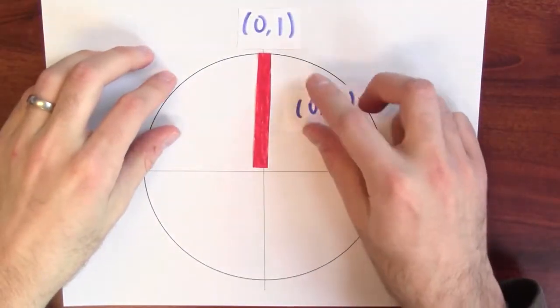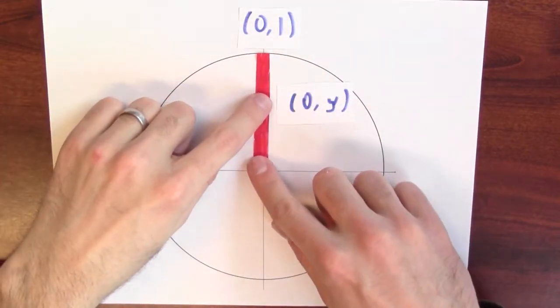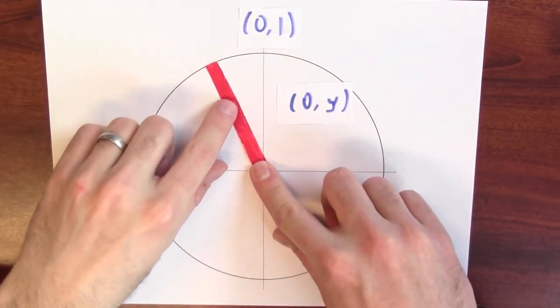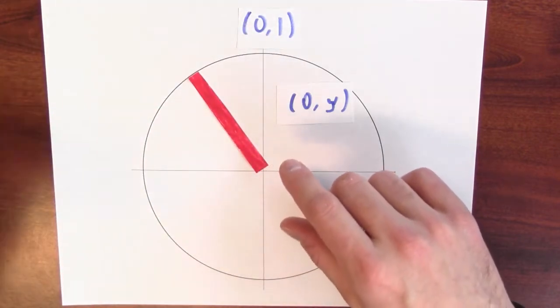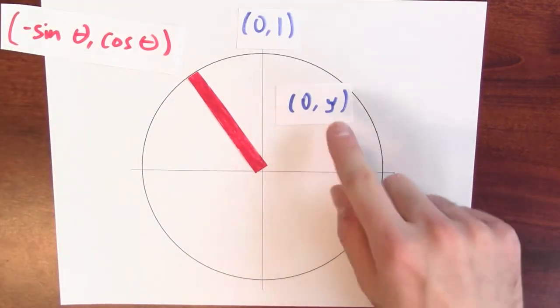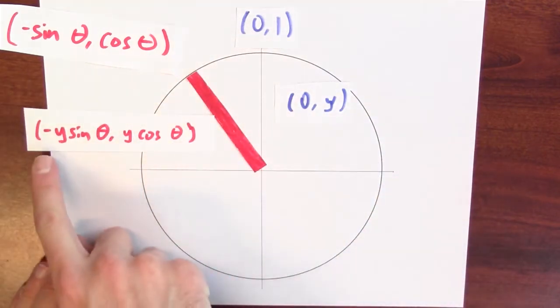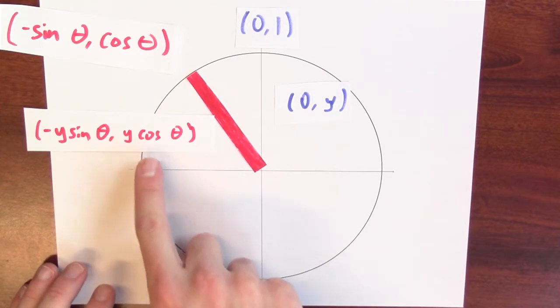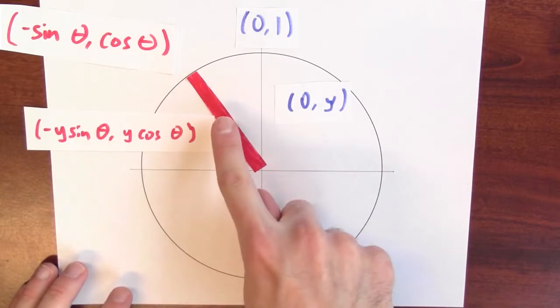What if I rotate (0, y) through an angle of theta? Similarly, if I've got some point (0, y), say y is between 0 and 1 — some point on this red line — the point (0, 1) rotates to (minus sine theta, cosine theta) on the circle. So the point (0, y) rotates to (minus y sine theta, y cosine theta) — exactly that point scaled by y.